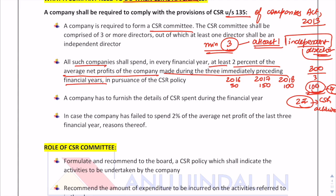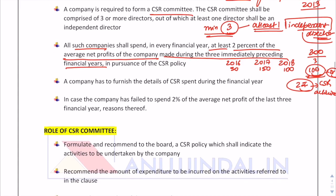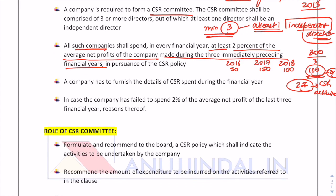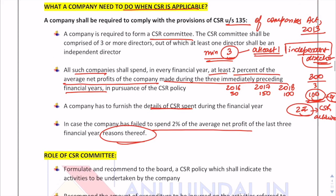A company also has to furnish details of the CSR spent — on what activities it is actually spending and what amount it has kept aside relative to the net profits earned during the three financial years. In case a company is unable to spend two percent of the average net profits, the reason must be disclosed by such a company.